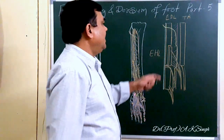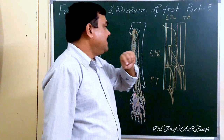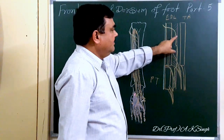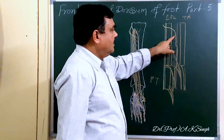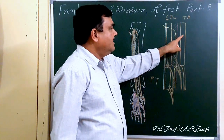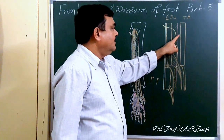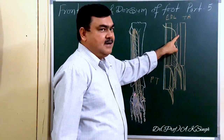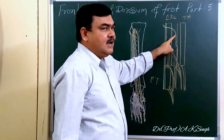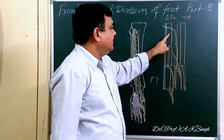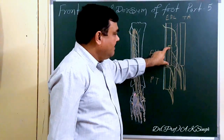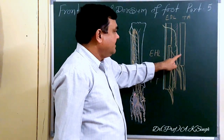So in the upper one-third part, the relation from medial to lateral is: tibialis anterior, then the anterior tibial artery, then the deep peroneal nerve, then extensor digitorum longus.